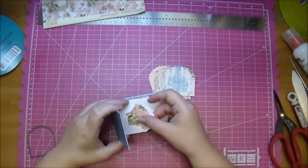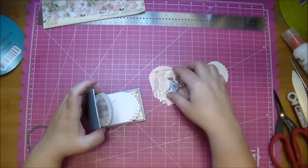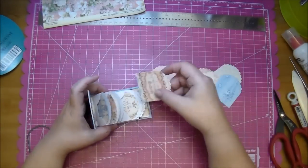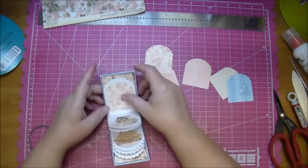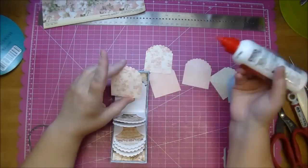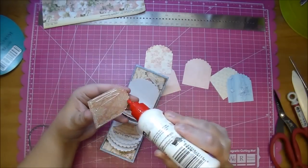Now I'm just adding them to the pockets. This paper is just so beautiful and now I'm using some wet adhesive to add the decorative piece to the back and that will hide my hinge piece.